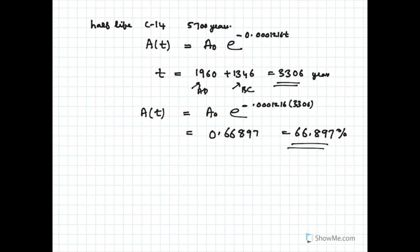Now King Tut ruled Egypt for 10 years. So if you take 10 years, t can also be taken as 3,306 plus another 10 years, which means 3,316. Now you substitute 3,316 and find A(t) using the same formula: A₀ times e to the power of minus 0.0001216 multiplied by 3,316. This turns out to be 66.816.